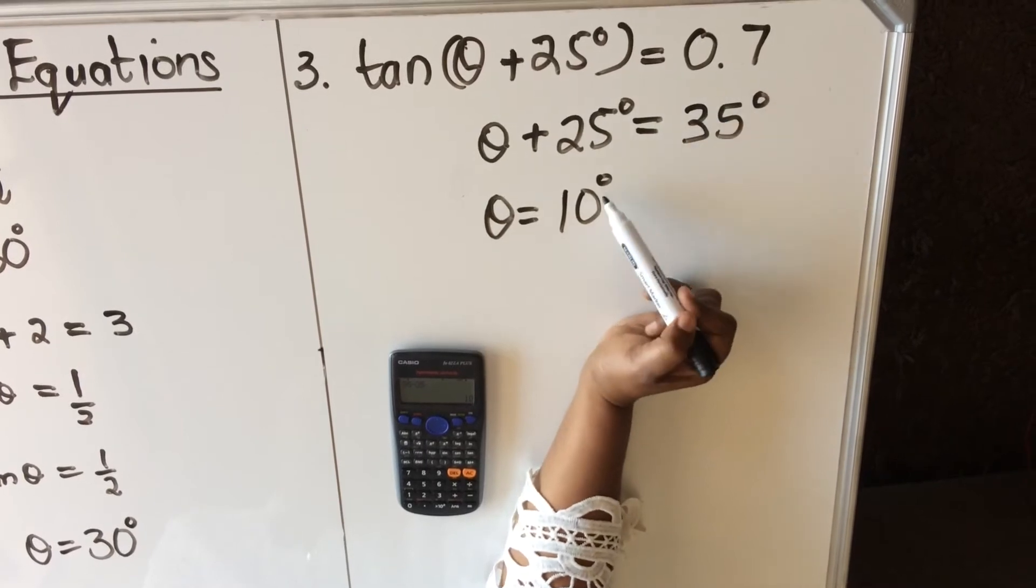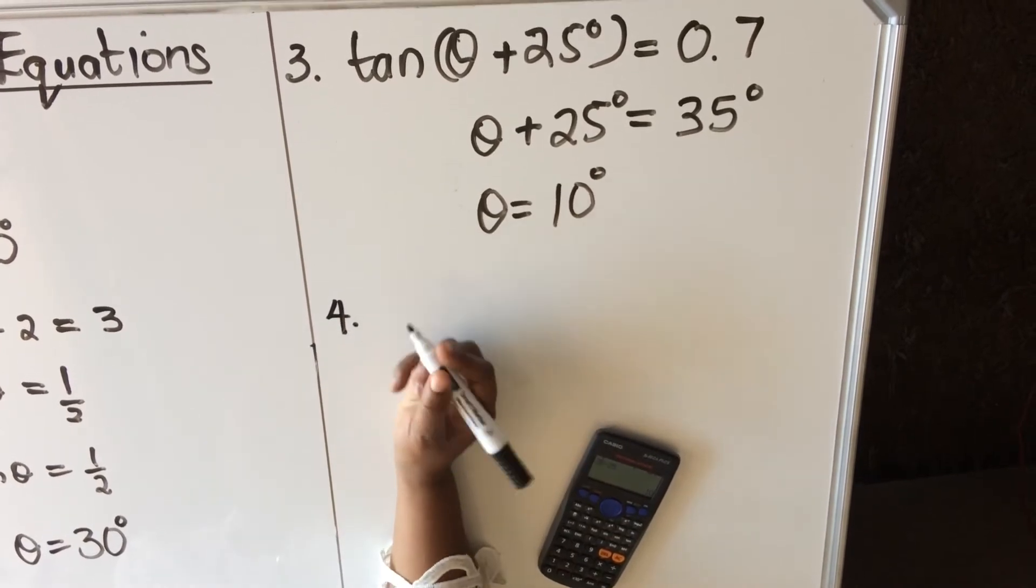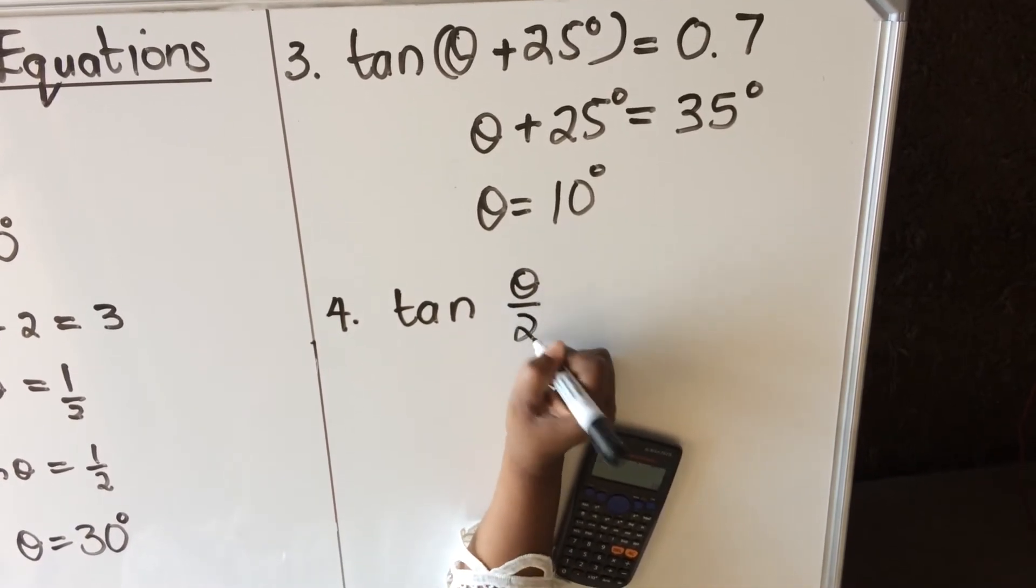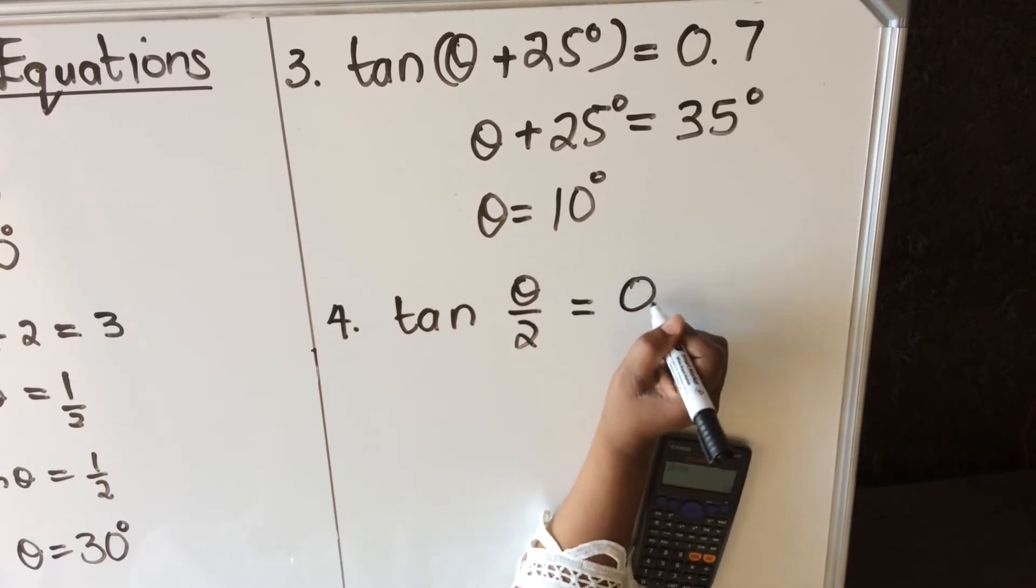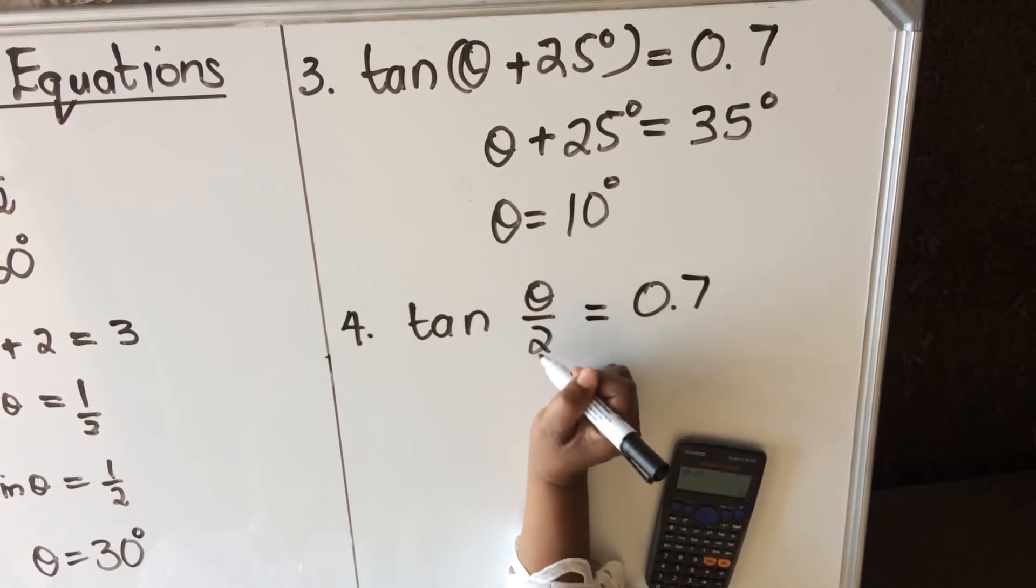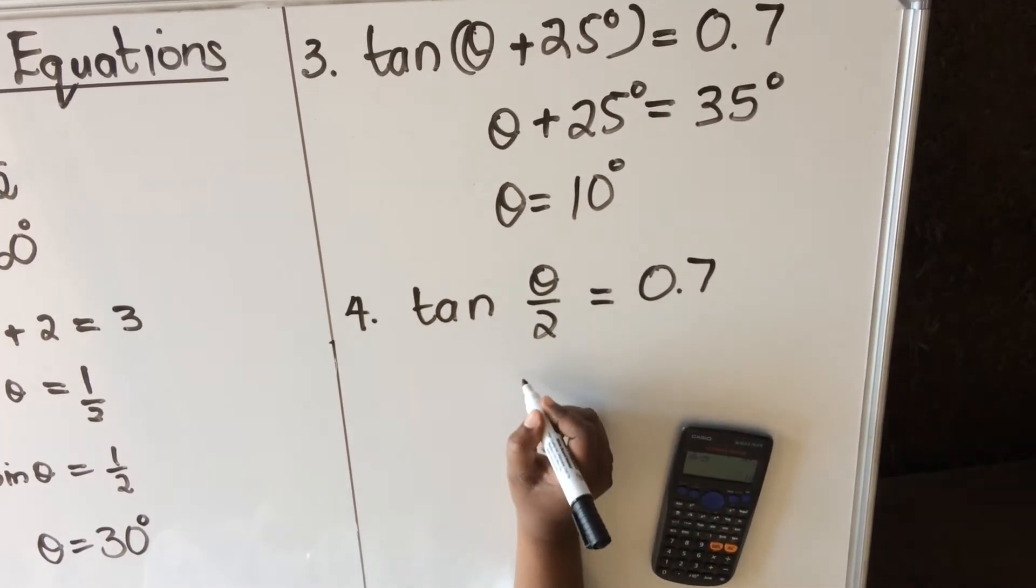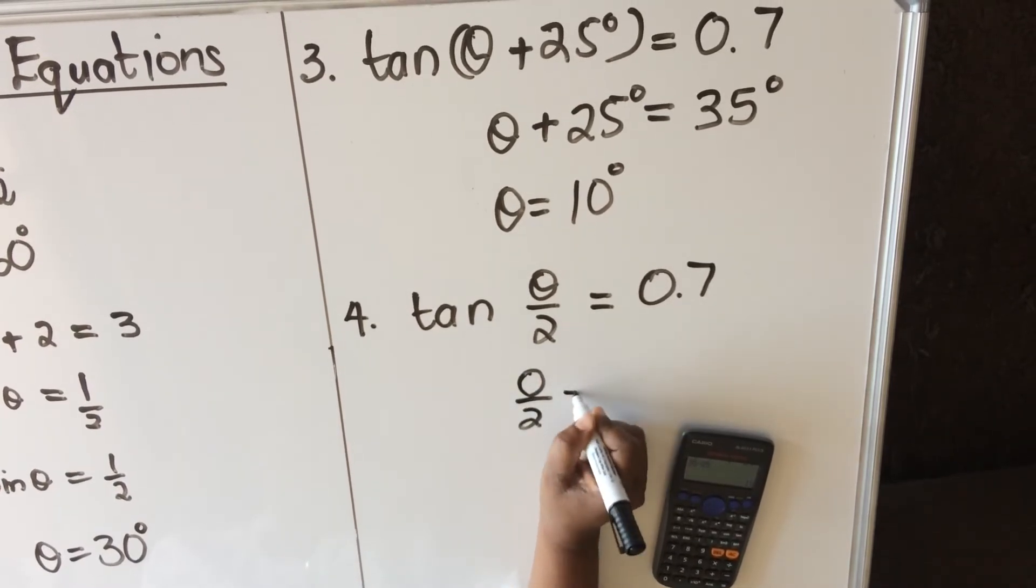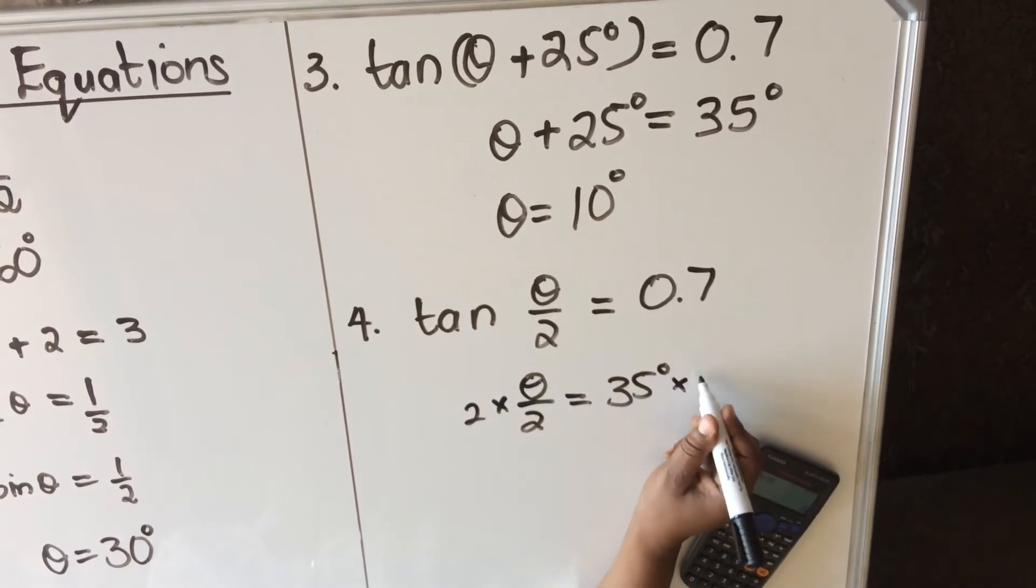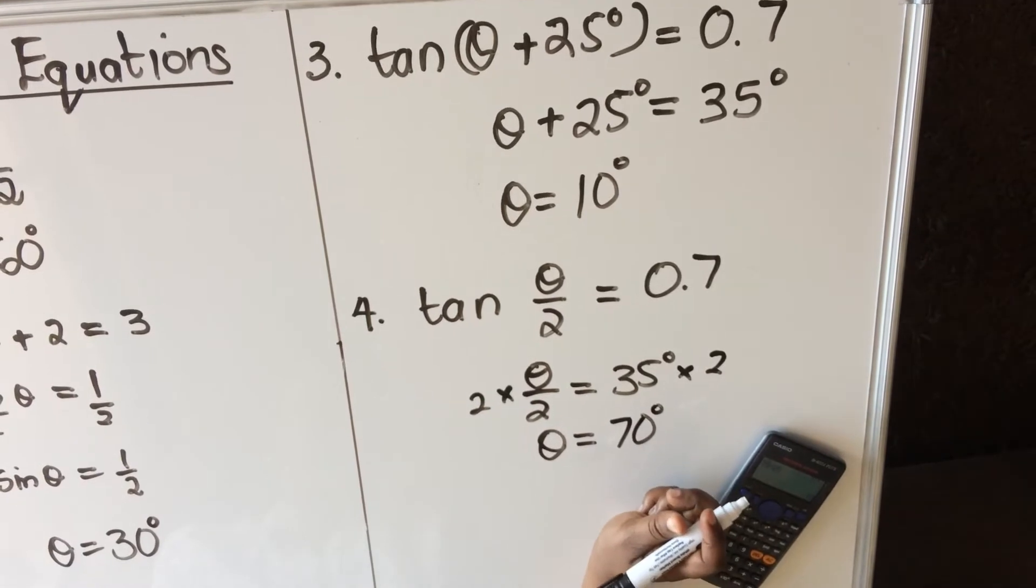The fourth one is similar to that one. I'm going to use tan again. I have theta divided by 2 equals 0.7. Same thing here: do not fiddle with the angle. Your angle now is theta divided by 2, that's your angle. You do the same thing as you did before, so theta divided by 2 will be 35 degrees. Then you get rid of the 2 by multiplying both sides by 2, then your theta will be 35 times 2, which is 70 degrees.